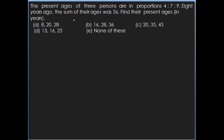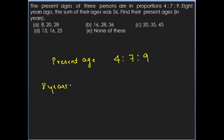The next question: the present ages of 3 persons are in proportion 4 is to 7 is to 9, and 8 years ago the sum of their ages was 56. Find their present ages. The present age ratio of the 3 persons is 4 is to 7 is to 9, and 8 years ago the sum of their ages is 56.